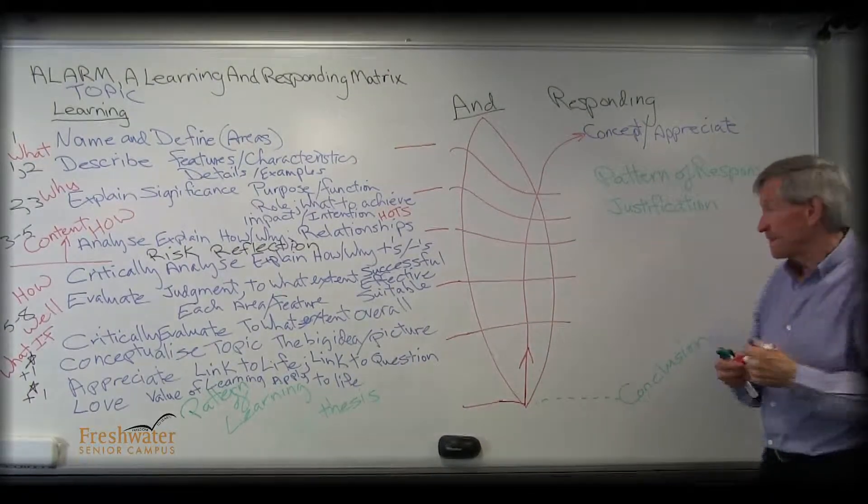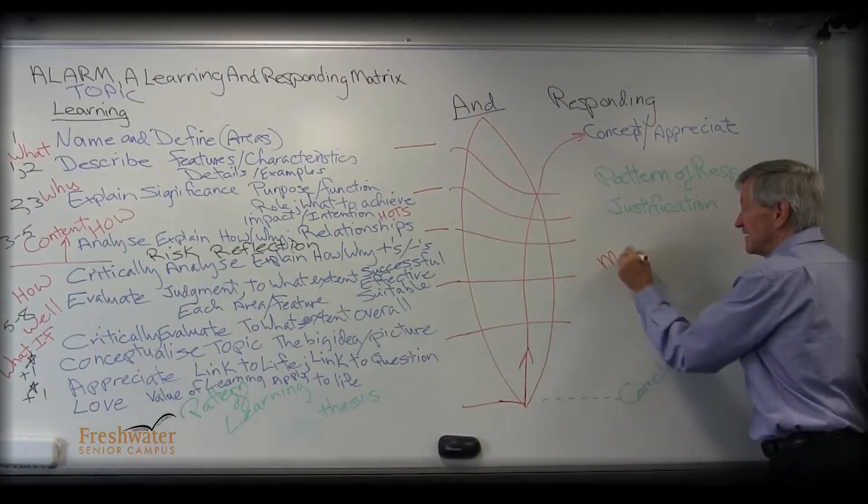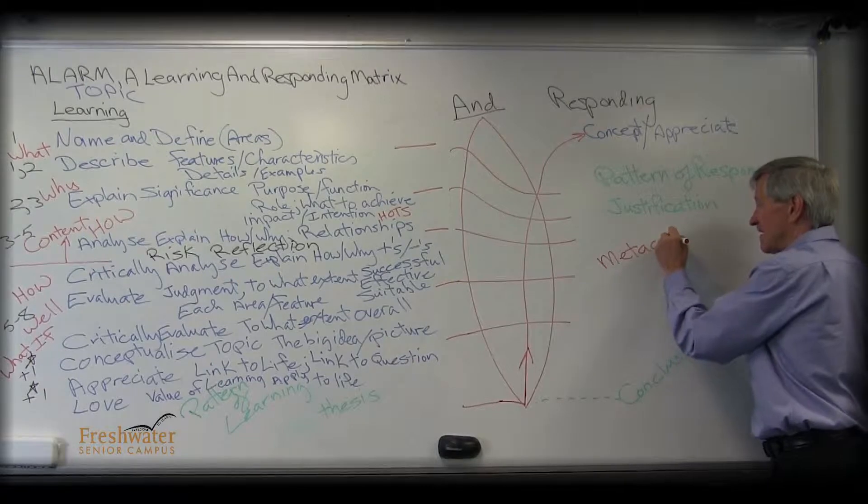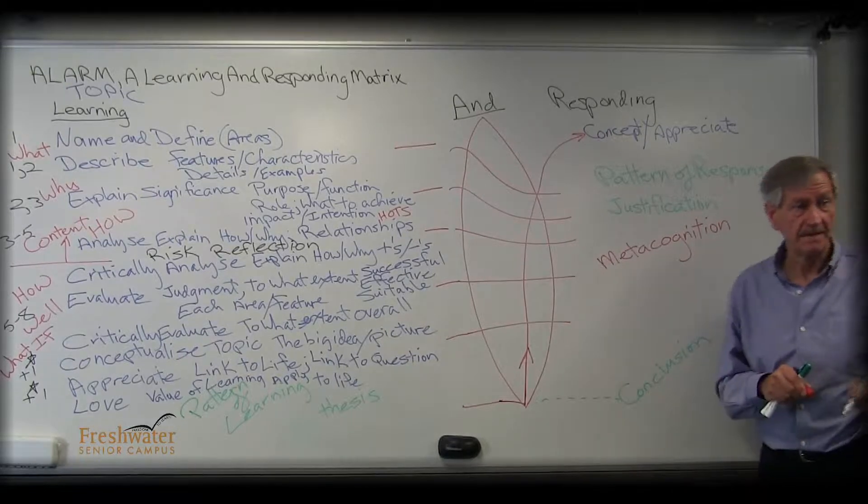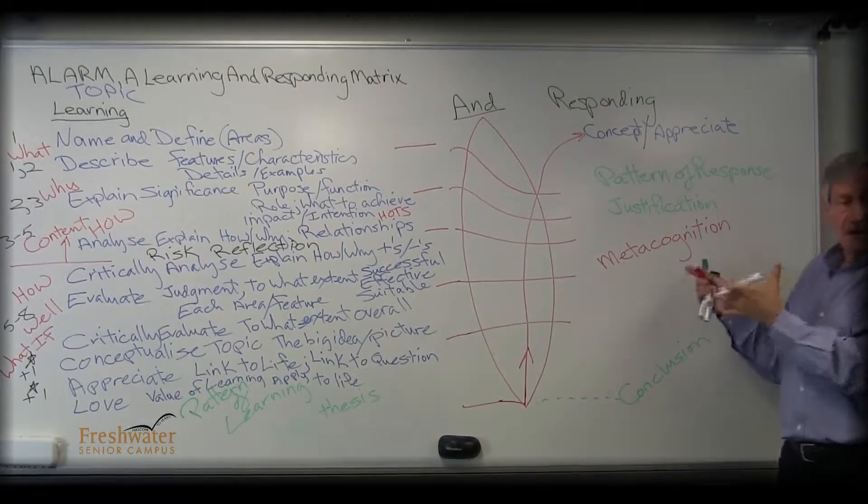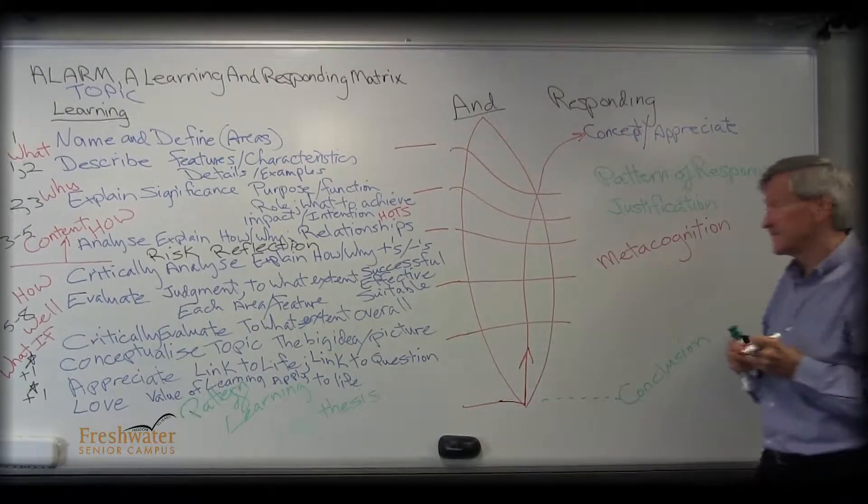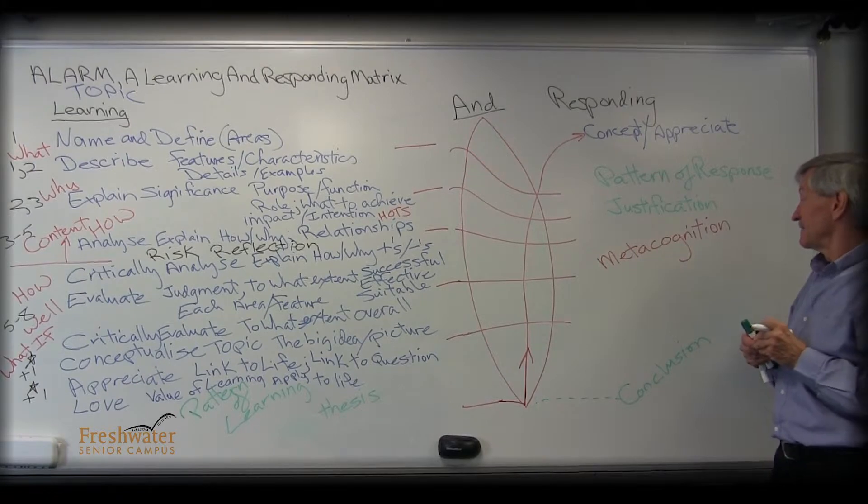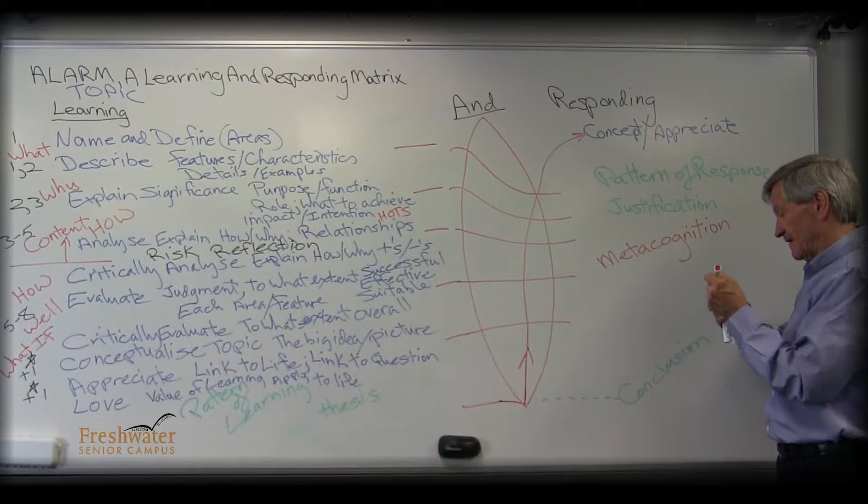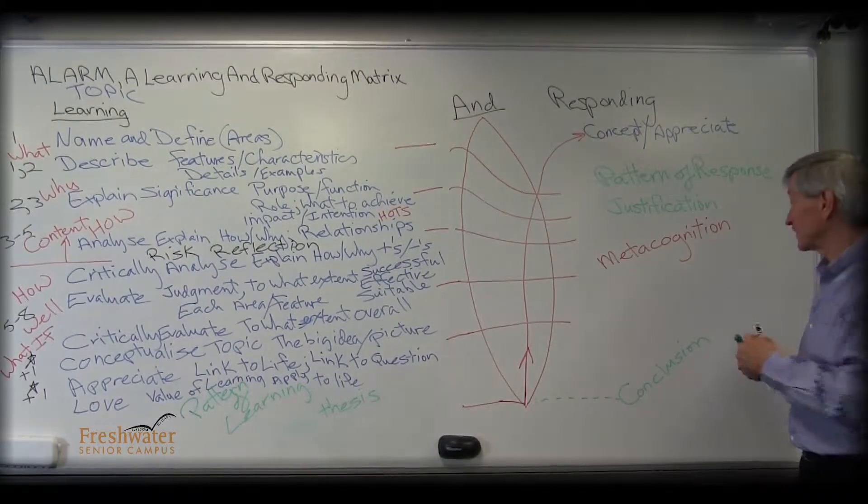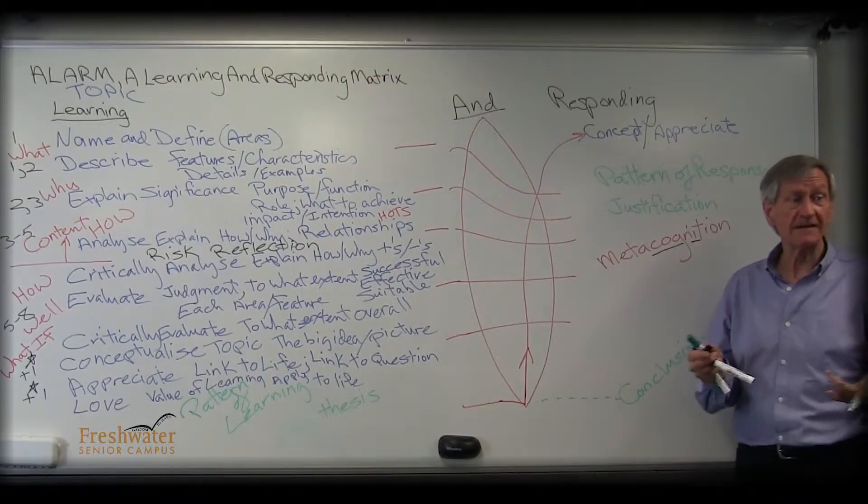Okay, learning how to learn. The closest word I can think of for learning how to learn is metacognition. You can use ALARM to understand this concept just like anything else. Let's break it apart into its pieces. First, we look at the parts of this one word, this concept: cogni, to cognize, to recognize, to see, to perceive.